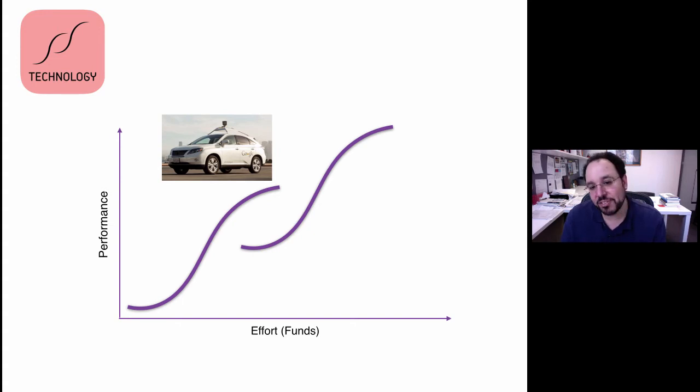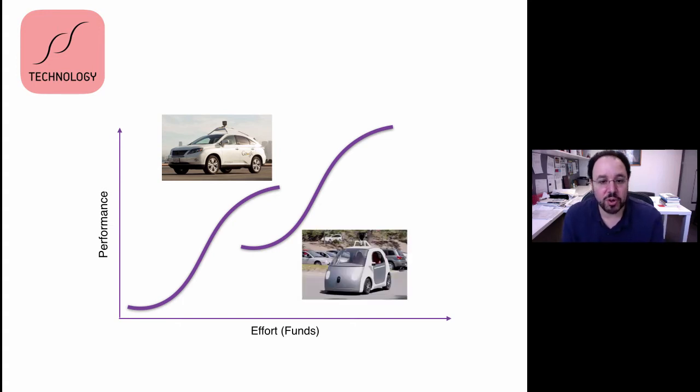But more recently, they've switched. And they've switched to a model that allows them to build their own cars. It doesn't have a steering wheel. It is optimized to be purely autonomous. And it's also, as you can see, quite small. Why is that?